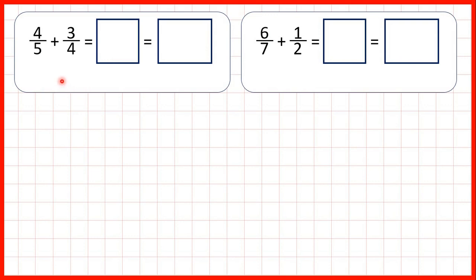Here we're adding fractions with different denominators and we have two answer boxes. That's because adding these fractions will give us a total of more than one whole, so we can write our answer as both an improper fraction and a mixed number.